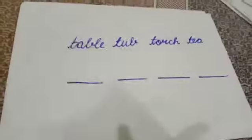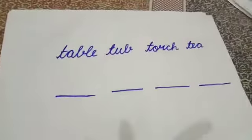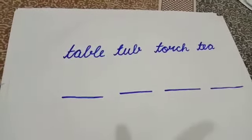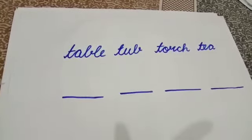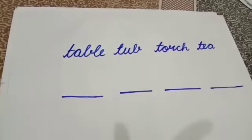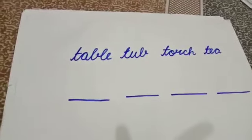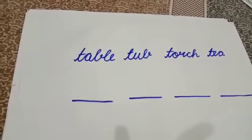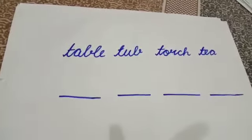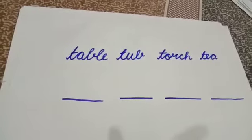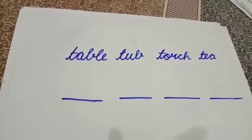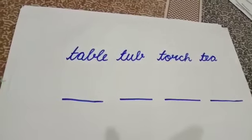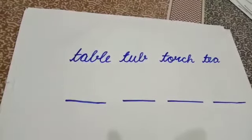Here students, look at another list of words. The words are table, tub, torch, and tea. Here all the words are starting with letter T. Now how to arrange them in alphabetical order? When two or more words begin with the same letter, we sort them by looking at the second letter of that word.